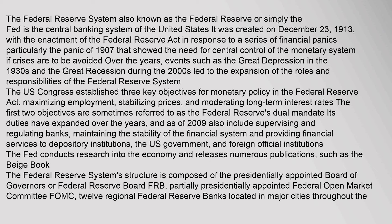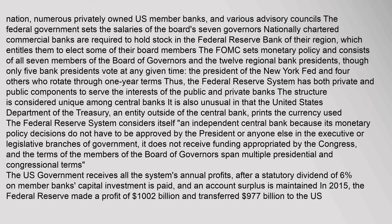The Federal Reserve System's structure is composed of the presidentially appointed Board of Governors (FRB), the partially presidentially appointed Federal Open Market Committee (FOMC), 12 regional Federal Reserve Banks located in major cities throughout the nation, numerous privately owned U.S. member banks, and various advisory councils. The Federal Government sets the salaries of the Board's seven governors. Nationally chartered commercial banks are required to hold stock in the Federal Reserve Bank of their region, which entitles them to elect some of their board members. The FOMC sets monetary policy and consists of all seven members of the Board of Governors and the twelve regional bank presidents, though only five bank presidents vote at any given time.